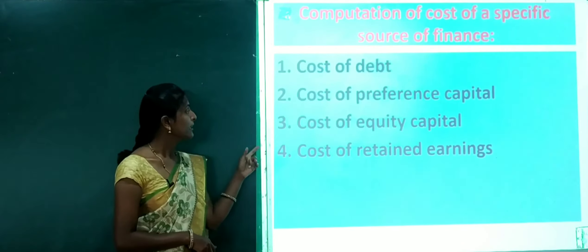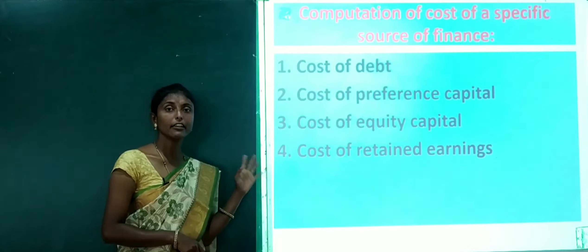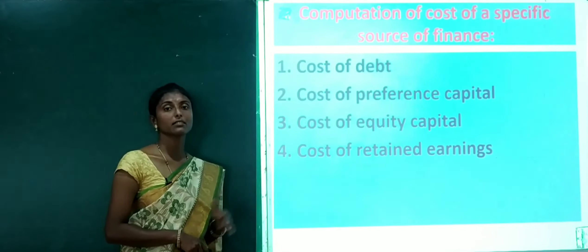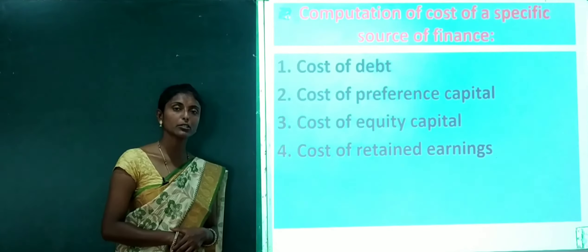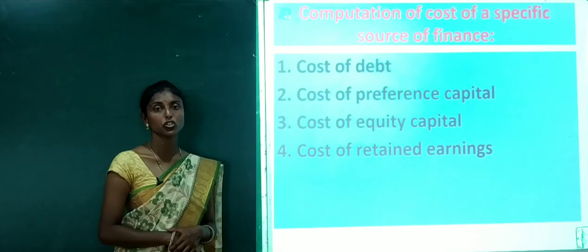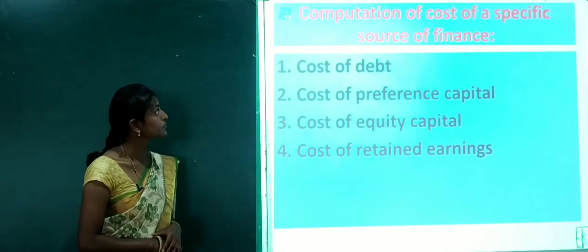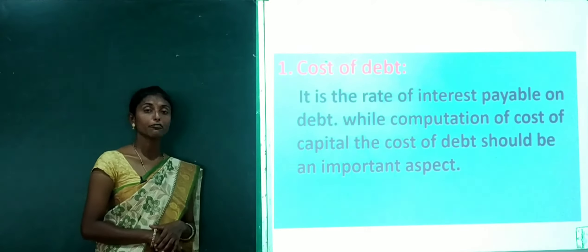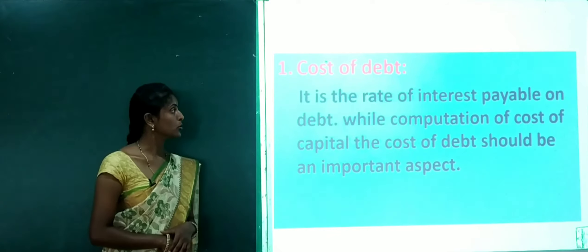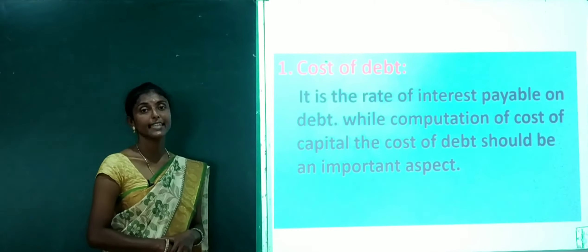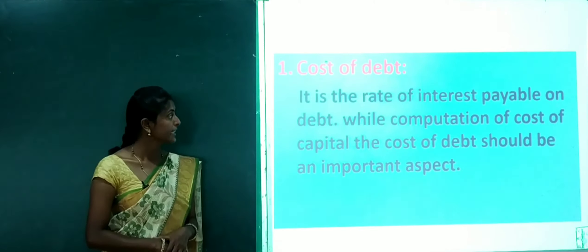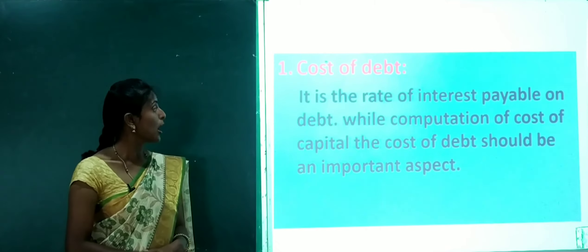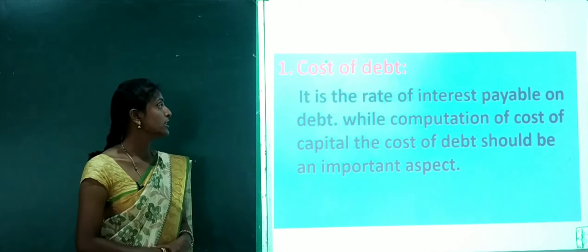Here we have 2 marks, 15 marks, and 5 marks questions. So the first method is cost of debt. It is the rate of interest payable on debt.